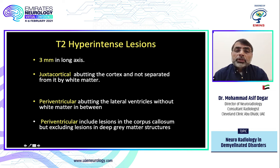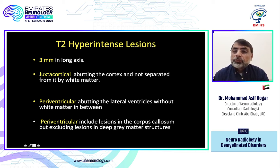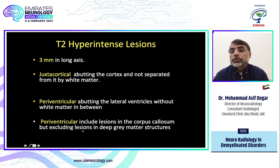According to the McDonald criteria, lesions should be at least 3 mm. Juxtacortical lesions should touch the cortex; periventricular lesions should touch the ventricle. A lesion in the corpus callosum along the calloseptal interface counts as a periventricular lesion. If the lesion is in the deep gray matter such as the caudate nucleus, it is not counted as periventricular.